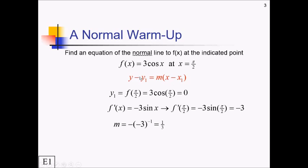We now have everything we need to go back to our point-slope formula and plug things in. So y minus 0 equals 1/3 times x minus π/2 — remember this is the normal line, not the tangent line. You could either leave it like this, or convert it to match multiple choice format.